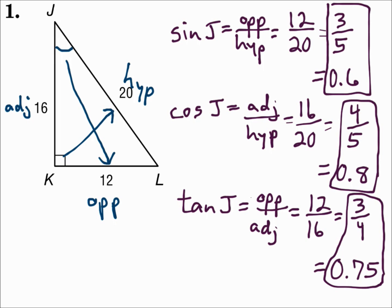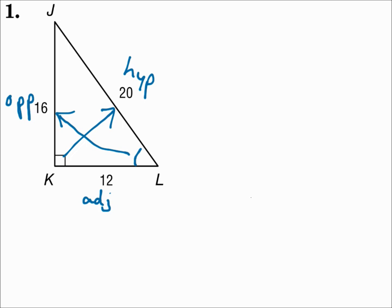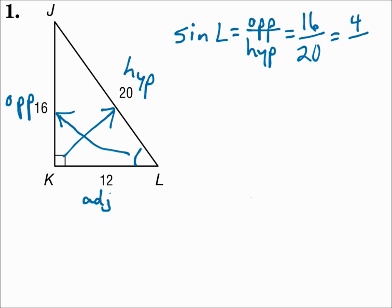Now let's do the same thing for angle L. I'm going to have to re-identify my sides. With angle L, the side across from that angle is opposite. Before, 12 was opposite, but that was opposite angle J. Now 16 is opposite, which is opposite angle L. The side across from the right angle is the hypotenuse, and the leg next to angle L is adjacent. Sine of L equals opposite over hypotenuse: opposite is 16, the hypotenuse is 20, which reduces to 4/5, and as a decimal that's 0.8.